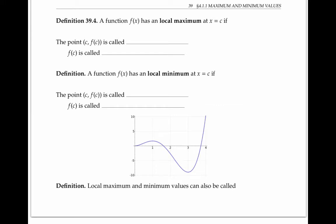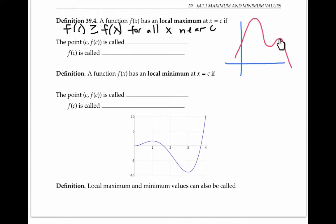In addition to absolute maximums, we can talk about local maximums. A function f of x has a local maximum at x equals c, if f of c is greater than or equal to f of x for all x near c. By near c, we mean there's some open interval around c for which this is true. For our graph of f, we have a local maximum right here, even though it's not the highest point anywhere, since there's a higher point elsewhere. This is the highest point in an open interval around c. The point c, f of c is called a local maximum point, and the y value f of c is called a local maximum value.